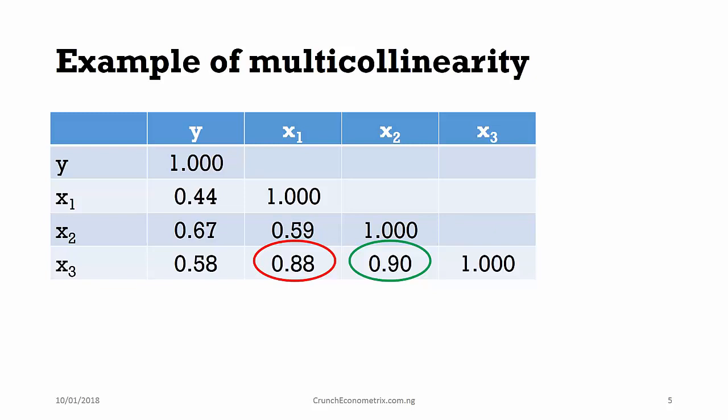This tells us that the first and second regressors can best explain the third regressor to a very high degree. So, this example shows us that the third regressor exhibits multicollinearity with the first and the second regressors.